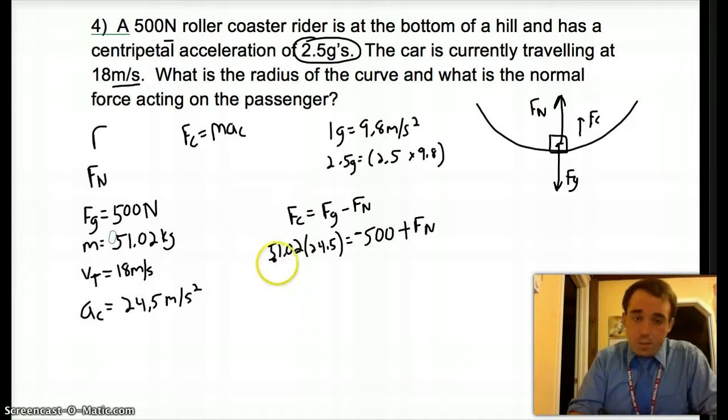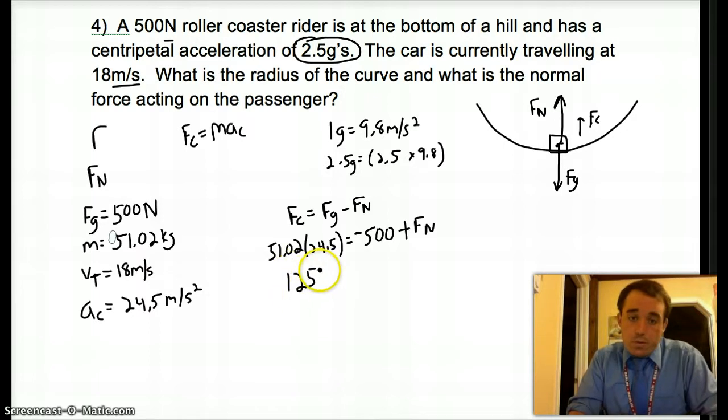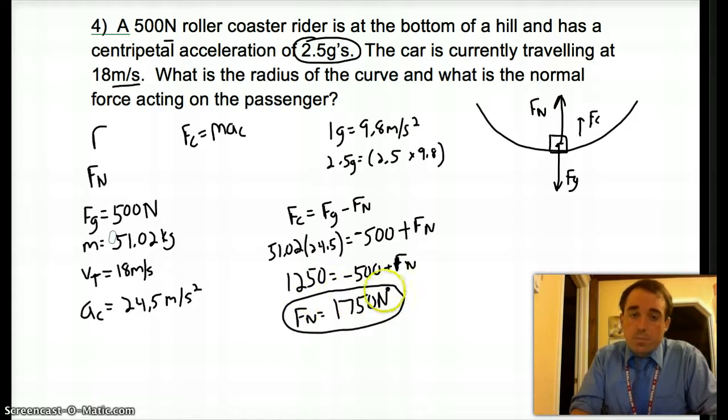51.02 times 24.5 gives us basically 1250. It's 1249.99. We're just going to go with 1250. 1250 newtons equals minus 500 newtons plus the normal force. So my normal force is going to be 1750 newtons. Okay. So I solved my normal force.